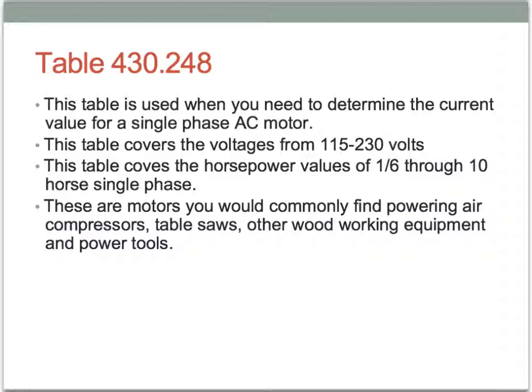A little background on Table 430.248: it's the table you use when you need to determine the correct value for a single phase AC motor. It covers voltages from 115 to 230, and horsepower values from 1/6th through 10 horsepower. These are motors you would commonly find powering air compressors, table saws, and other woodworking equipment and power tools.